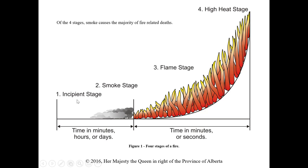They talked about the four stages: the incipient stage, smoke stage, flame stage, and the high heat stage. It depends on what type of detectors we have to detect these stages. Of the four, smoke causes the most deaths — it basically converts oxygen to smoke so you can't breathe and you'll perish from that before you even have to worry about burning. We need to get people out of the area in these first stages to reduce loss of life.